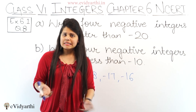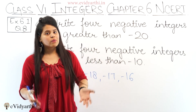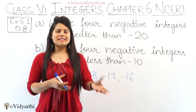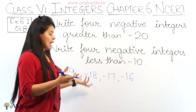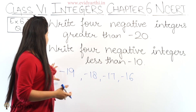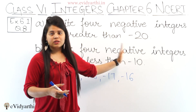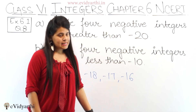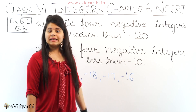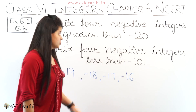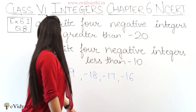We have to write 4 numbers like minus 1, minus 2, minus 3 — these are random examples. It can be more than this also.